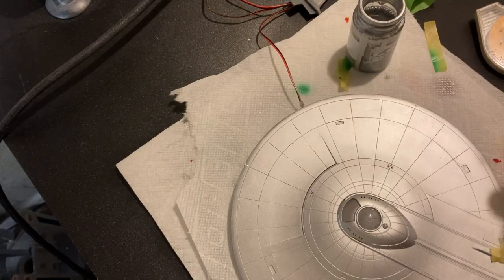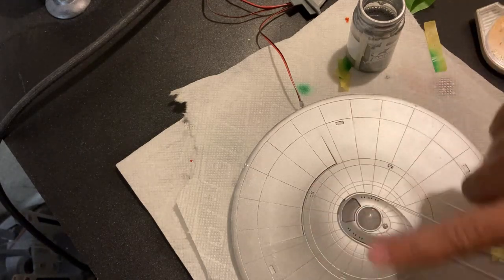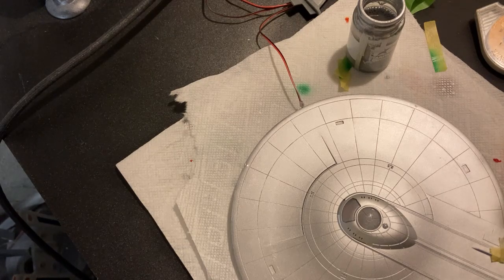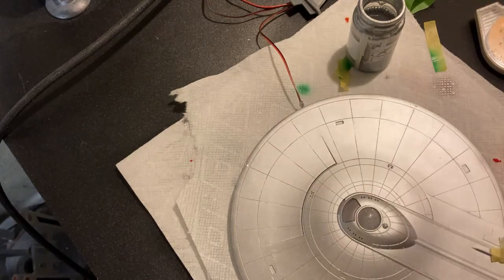I'm also taking the saucer back to chrome silver. I've taken off the rings that were the darker color because on this build we're going to be doing those darker parts with the aztec decals, so back to silver for the saucer.